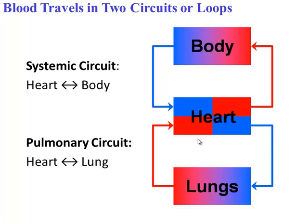The colors in this diagram give us a clue as to what's happening. In the systemic circuit, blood leaves the heart bright red — fully oxygenated — and travels to all parts of the body, dropping off oxygen to body cells. The blood that comes back to the heart is now deoxygenated; it has no oxygen. So it heads to the lungs, where it picks up lots of oxygen and returns to the heart. Then the cycle continues — it's kind of like a figure eight.